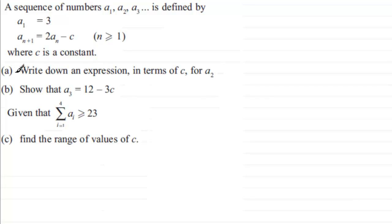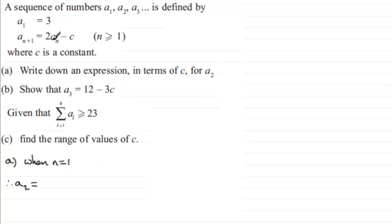There are three parts: a, b, and c. In part a we've got to write down an expression in terms of c for the second term a2. This is fairly straightforward — we just let n equal 1. When n equals 1, the recurrence gives us a2 equals 2 times a1 minus c. Since a1 is 3, we get a2 equals 2 times 3, which is 6 minus c.